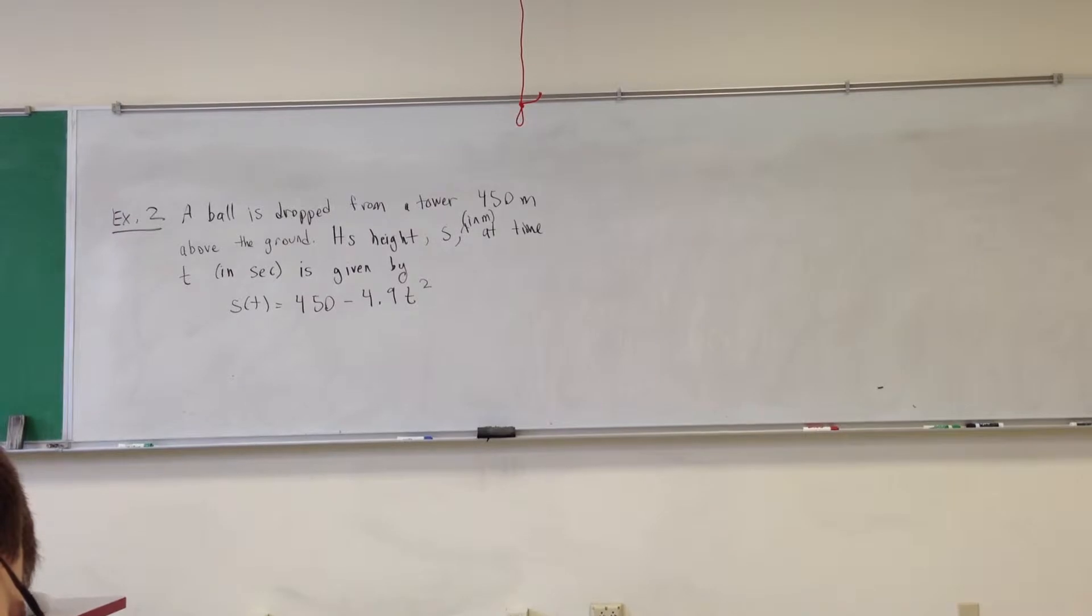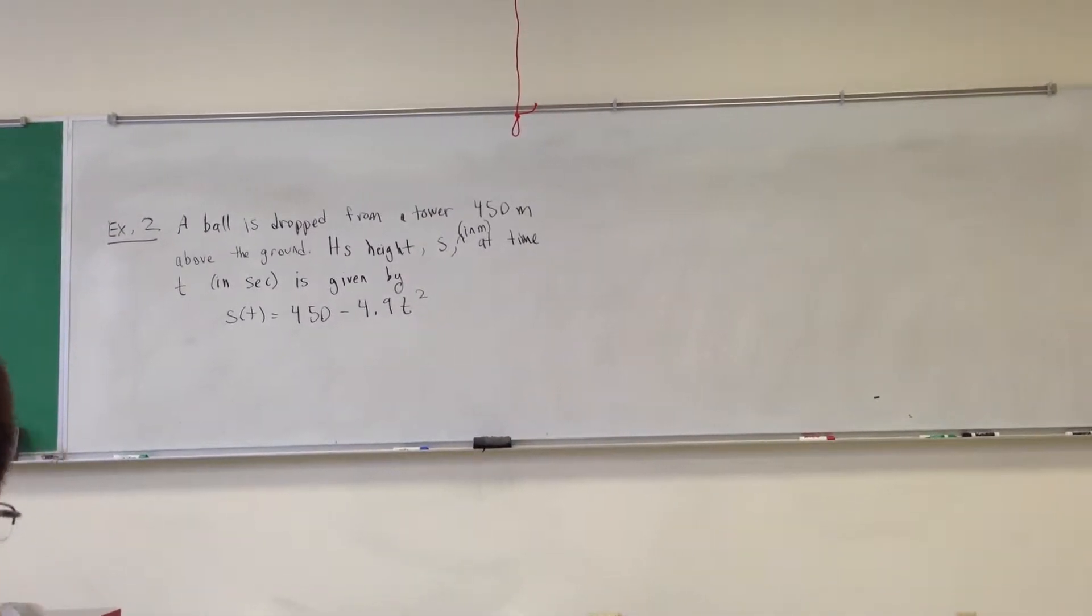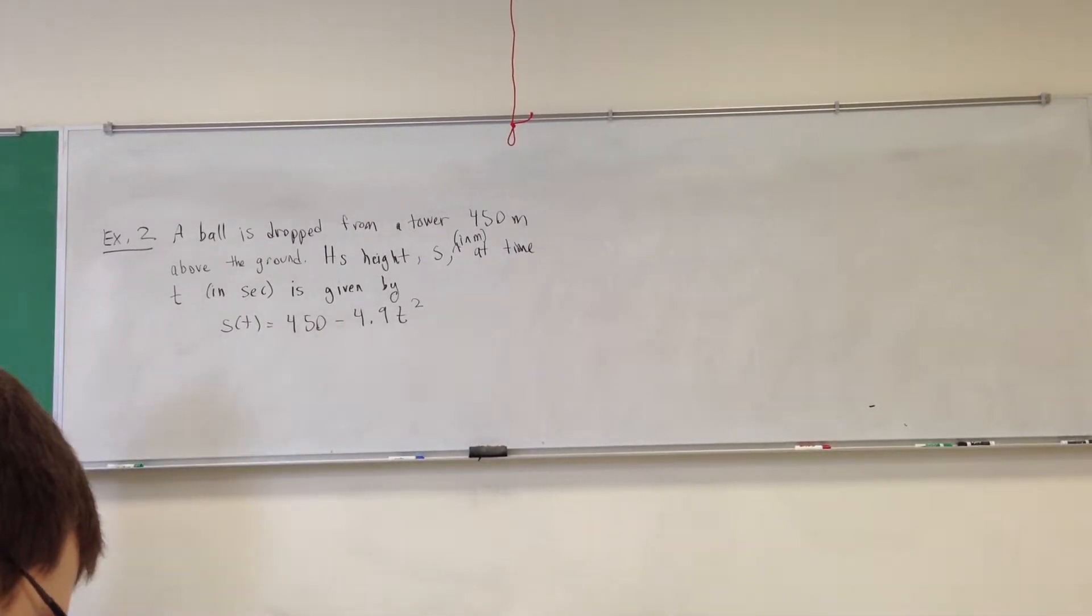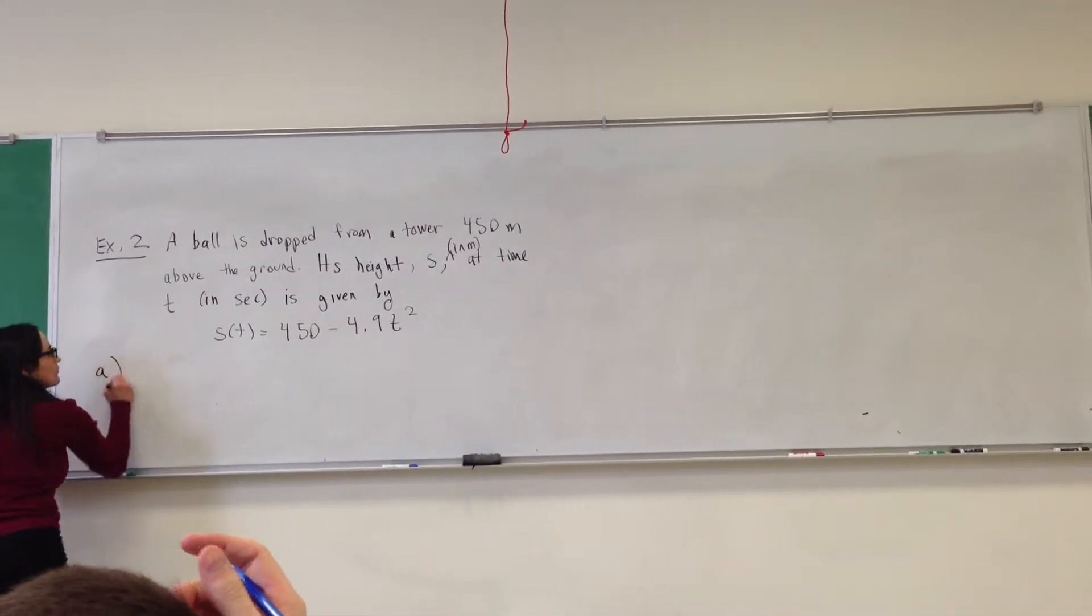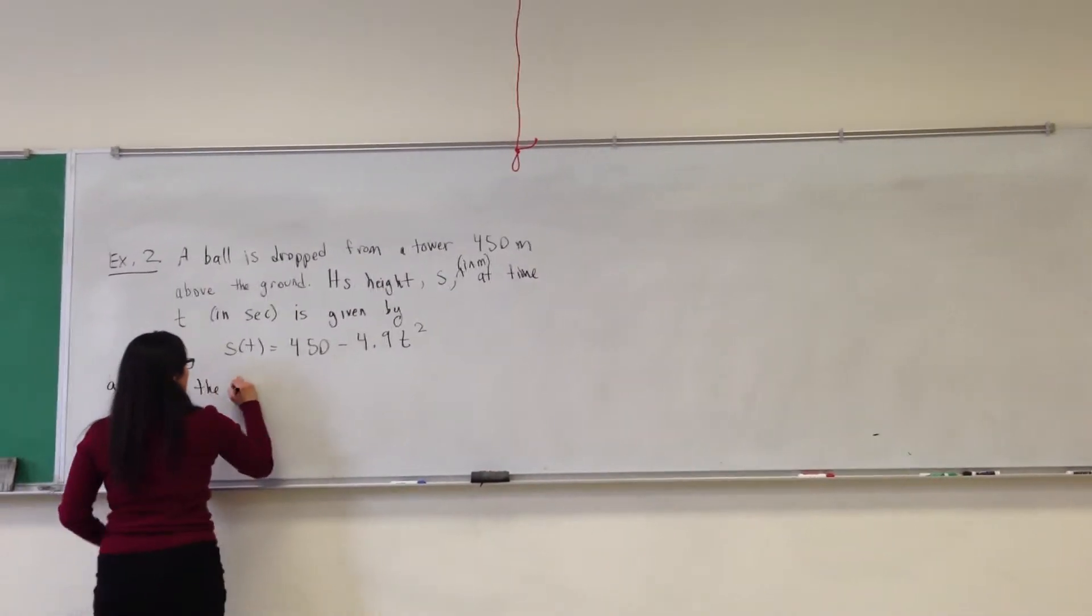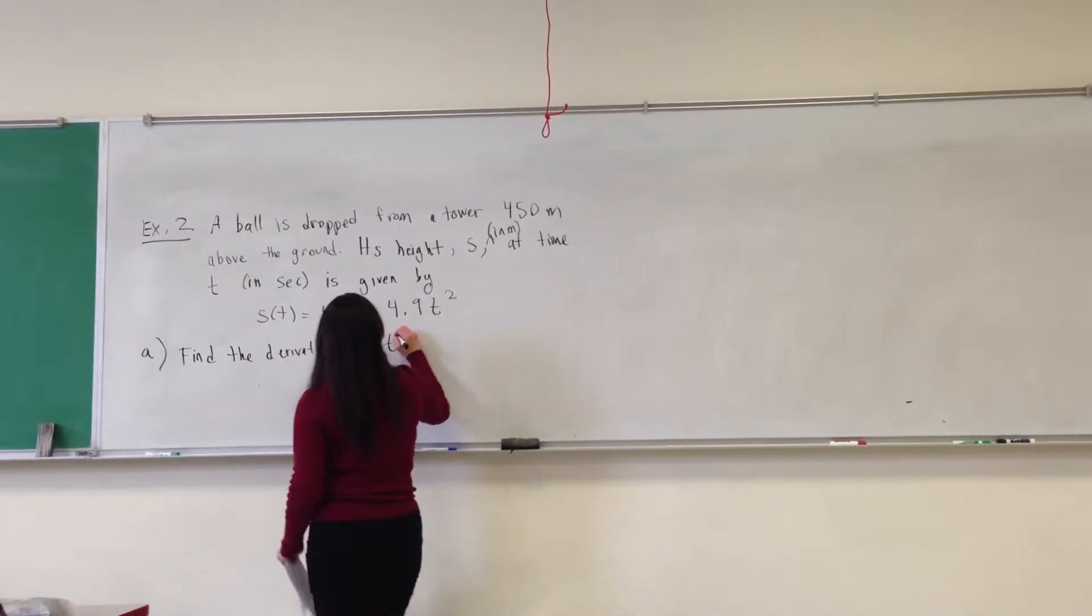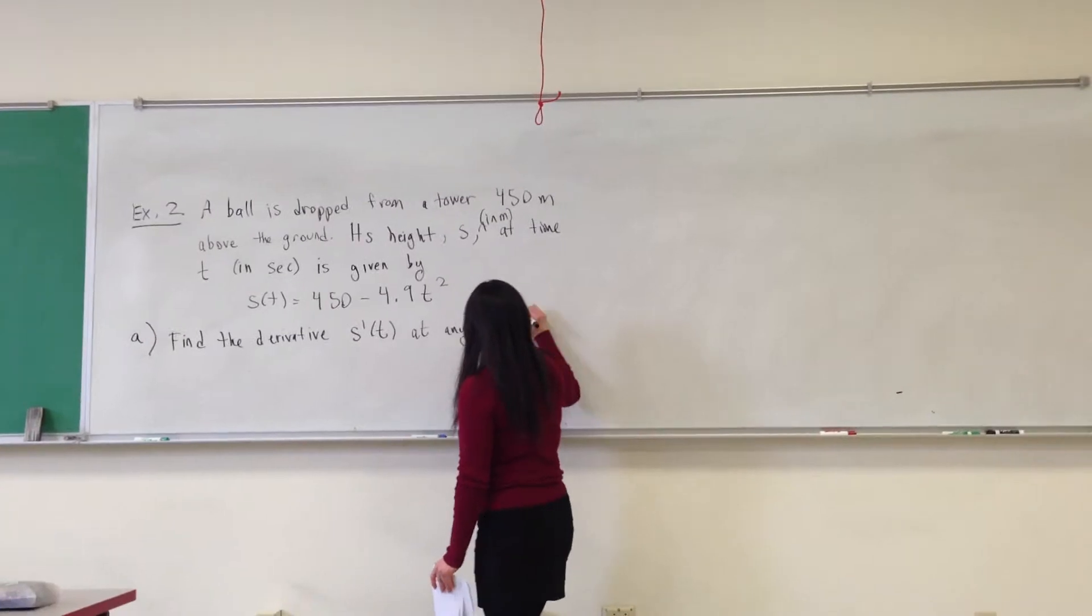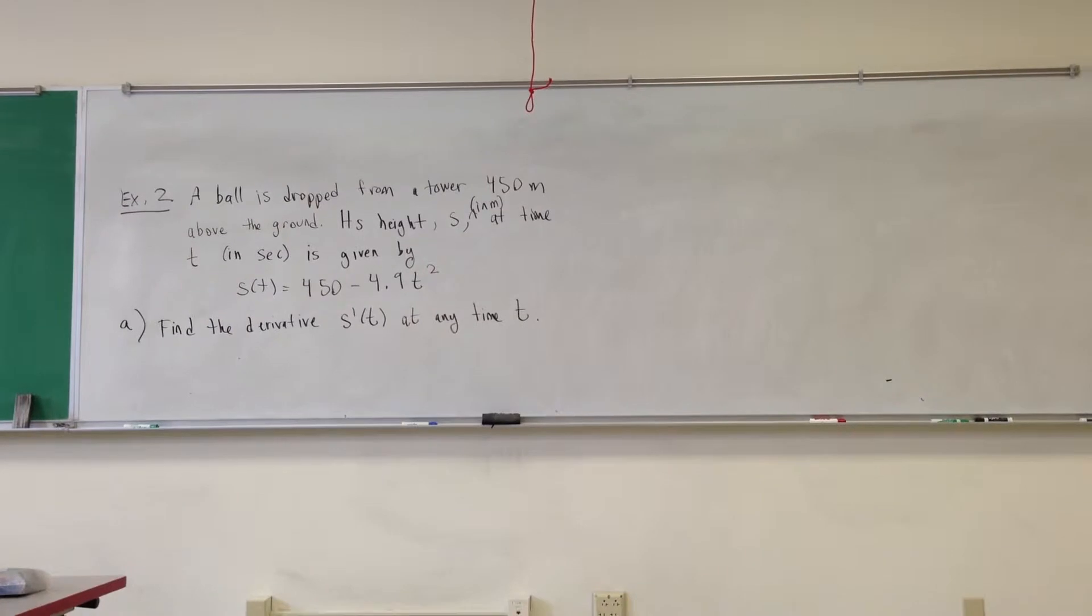So if you stand at the top of the tower and you drop a ball, you just drop it, no initial velocity, then the formula for the height of the ball is 450 minus 4.9 t squared. So first, let's find the derivative s prime of t at any time t. We want to write a formula for the derivative.